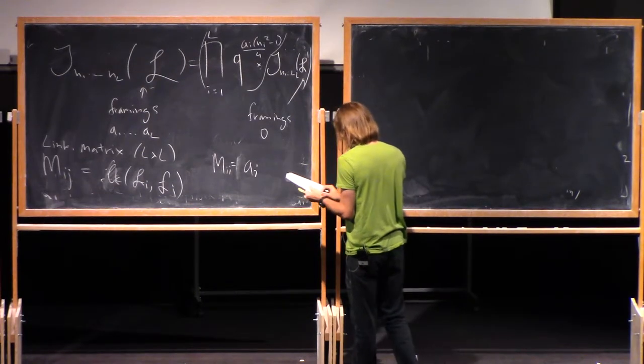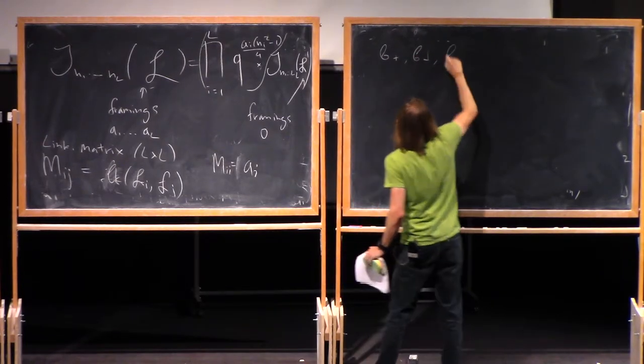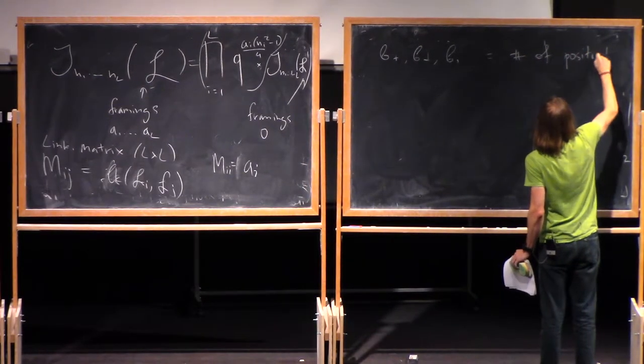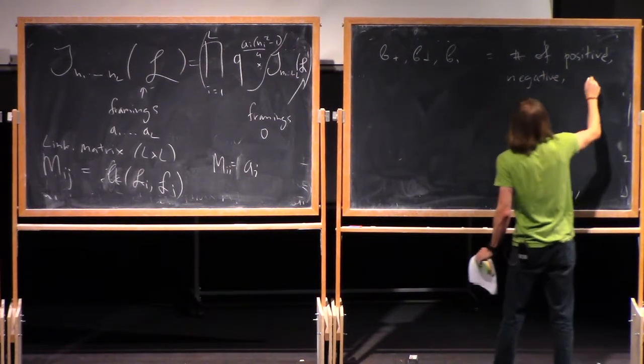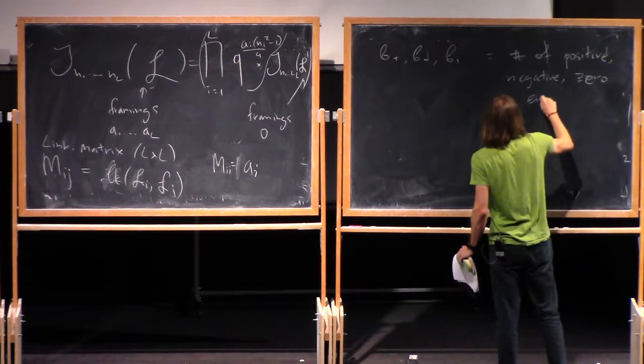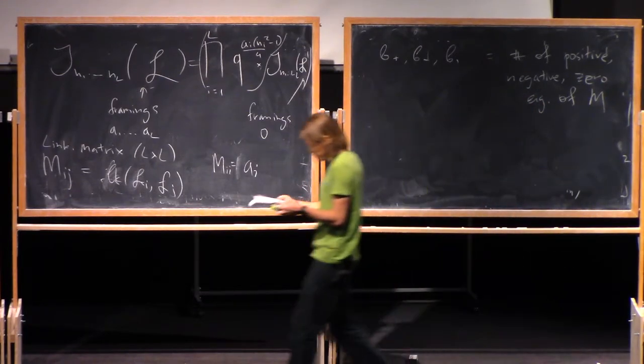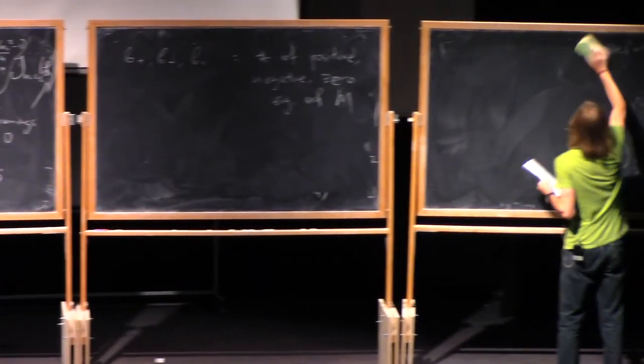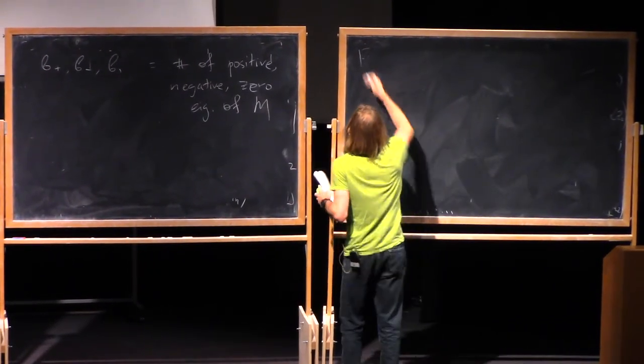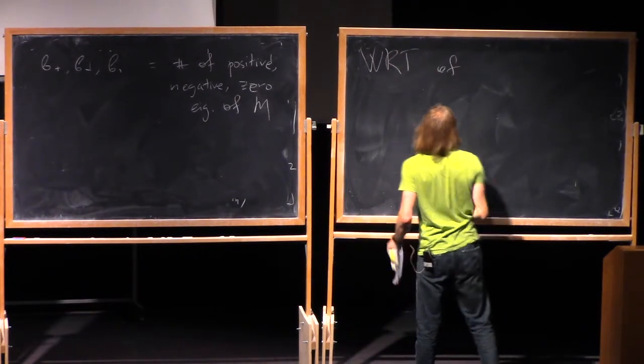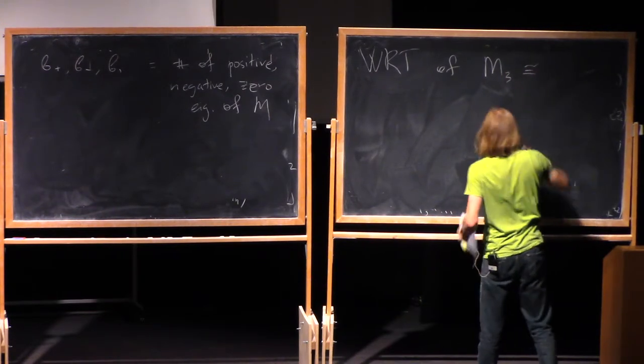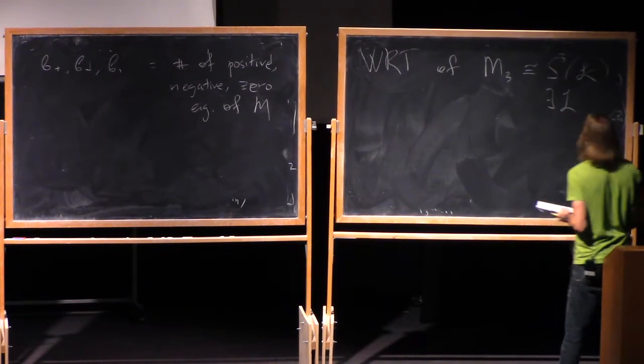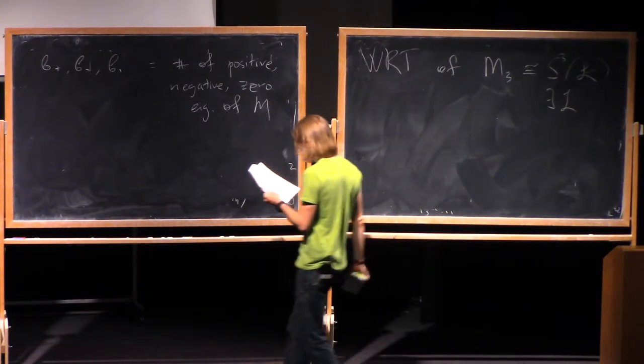Okay, and so let me denote by B plus, B minus, and B zero. These are numbers of respectively positive, negative, and zero eigenvalues of M. Okay, now I'm ready to say what is the WRT invariant.